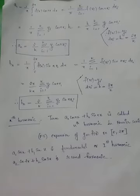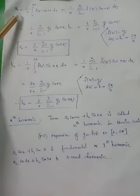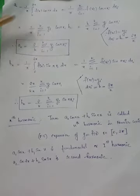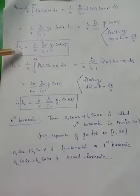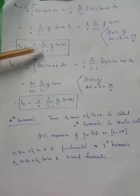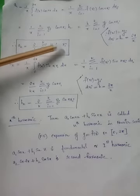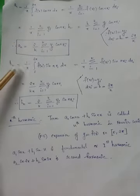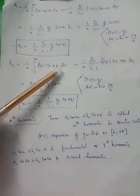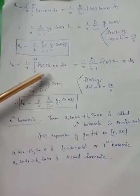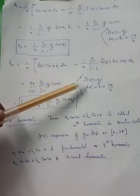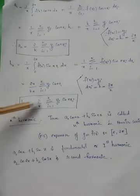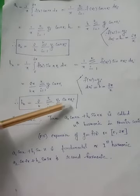For the continuous case, the Fourier coefficient aₙ = (1/π)∫₀²π f(x) cos(nx) dx. The equivalent coefficient aₙ for the discrete case is obtained as (2/k) Σᵢ₌₁ᵏ yᵢ cos(nxᵢ), using the same substitutions. Similarly, bₙ = (1/π)∫₀²π f(x) sin(nx) dx for the continuous case becomes bₙ = (2/k) Σᵢ₌₁ᵏ yᵢ sin(nxᵢ) for the discrete case.